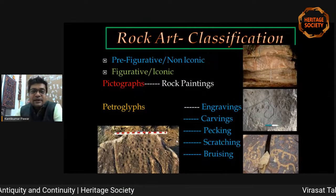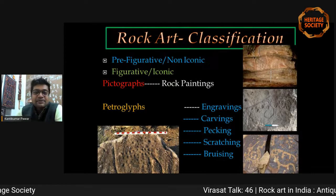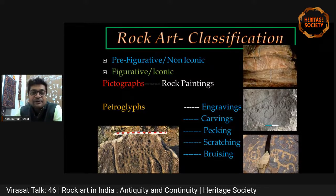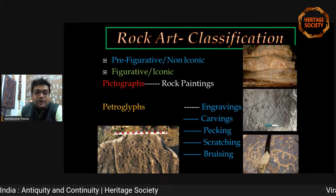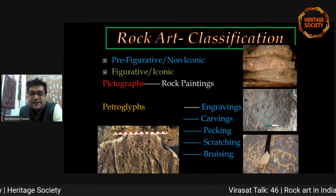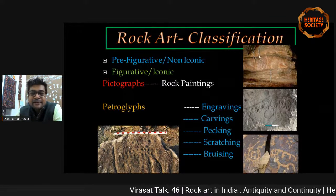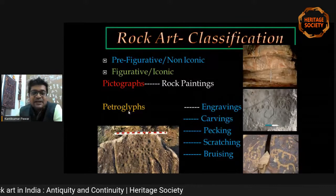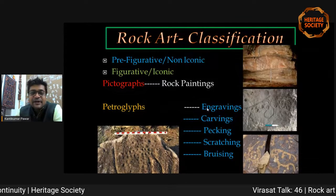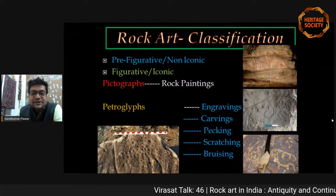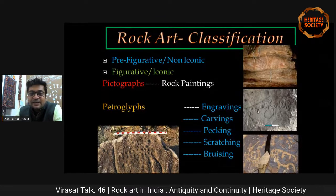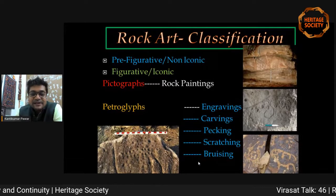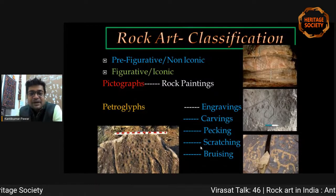Rock art classification: rock art can be found in pre-figurative form — known as non-iconic — as well as figurative, known as iconic. Pictographs are rock paintings; you can see red color paintings depicted on the panel of the rock. The second classification is petroglyphs, which are subdivided into engravings, carvings, peckings, scratching, and brushing. In this slide you can see engravings, brushing, scratching, and carvings.